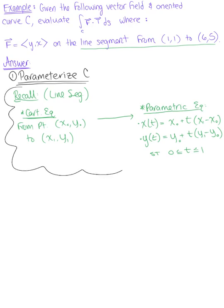So this is the formula that we're going to use to find our parametric equation. We'll label (x₀, y₀) as (1,1), and (x₁, y₁) is (6,5).